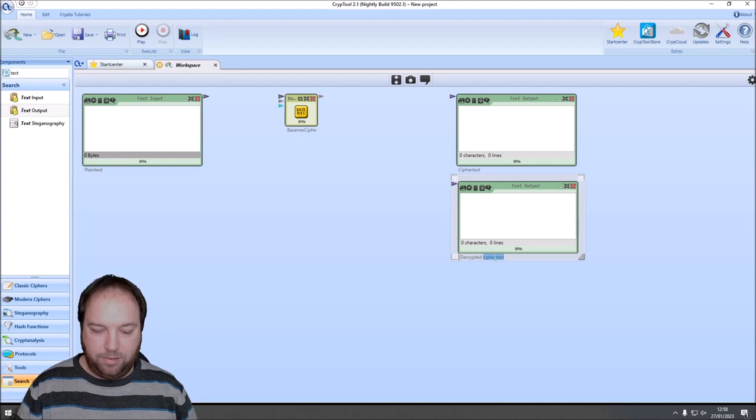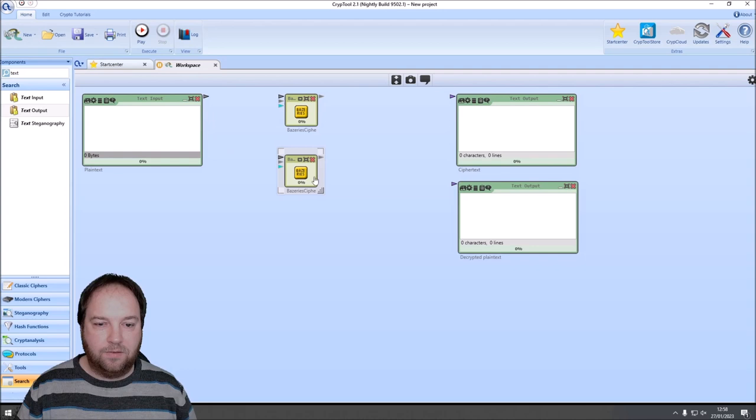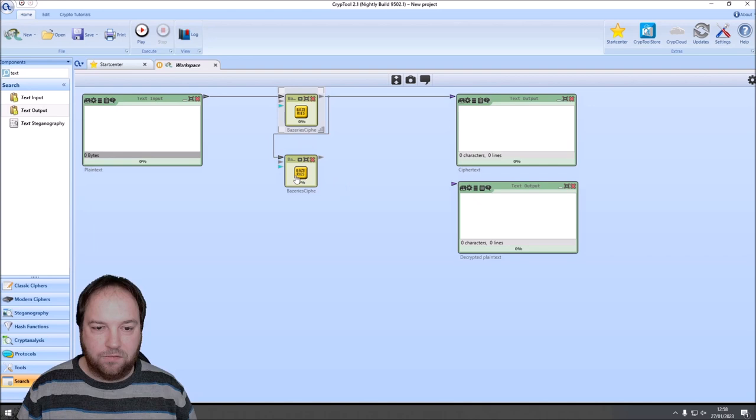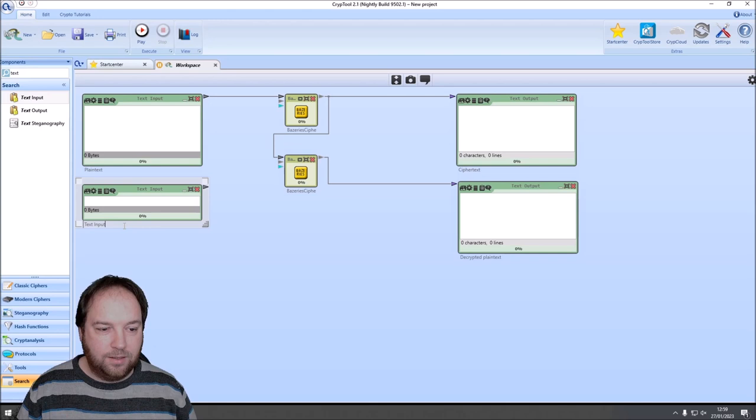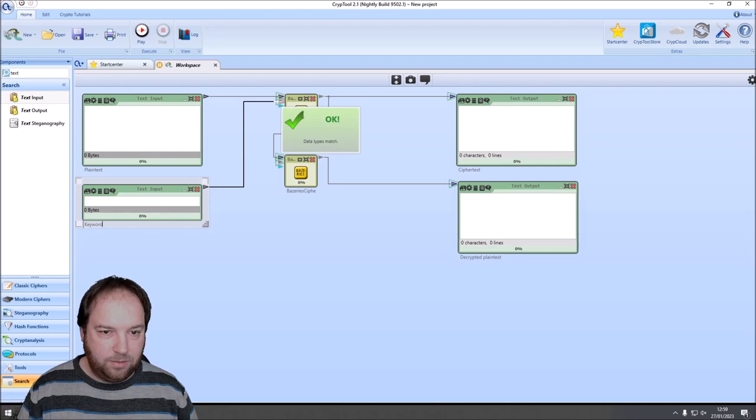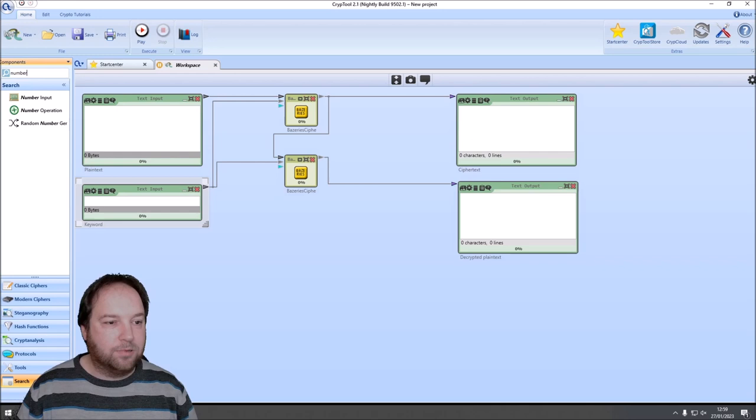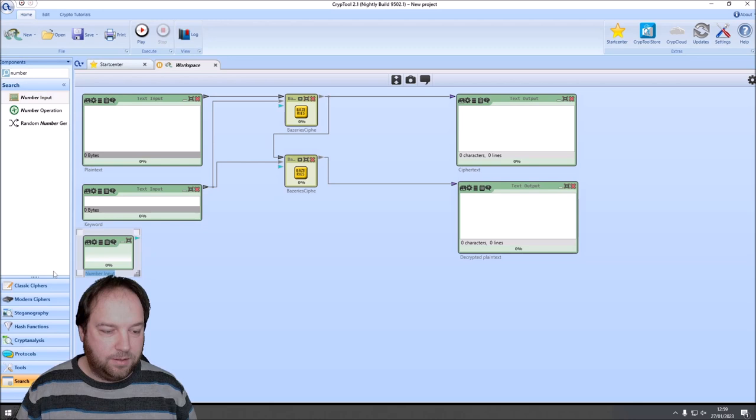And we need a second Bazeries cipher component for decryption. Let's connect the plain text with the input here. The cipher text output with the cipher text text output. Also with the second Bazeries cipher component for decryption. And this one with the decrypted plain text. Now we need two keywords. Or keys. First a keyword. This is used for the Polybius squares. For the second Polybius square. And then we need a number input, or the number key.